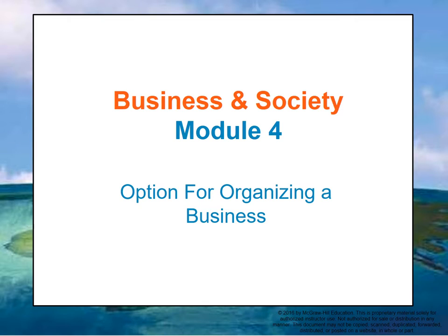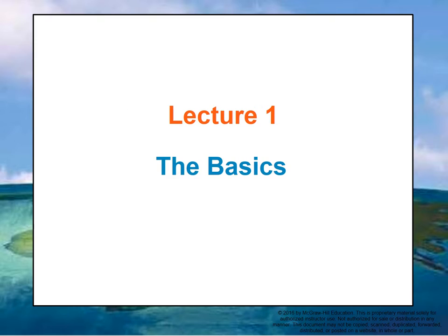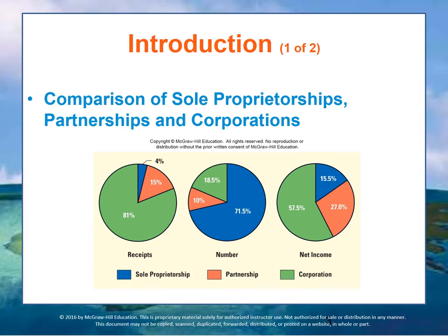This module focuses on options for forming a business. Let's start by looking at the basics. The pie charts in this graphic compare three types of ownership to the relative sales and net income of each of these types of business — that is, the size of these various types in the general economy.